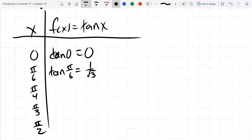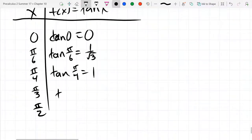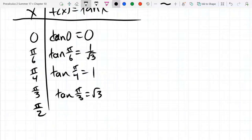We're gonna need decimal approximations for these. Pi over four is nice and easy. That's one. Tangent pi over three is square root three, and pi over two is undefined.